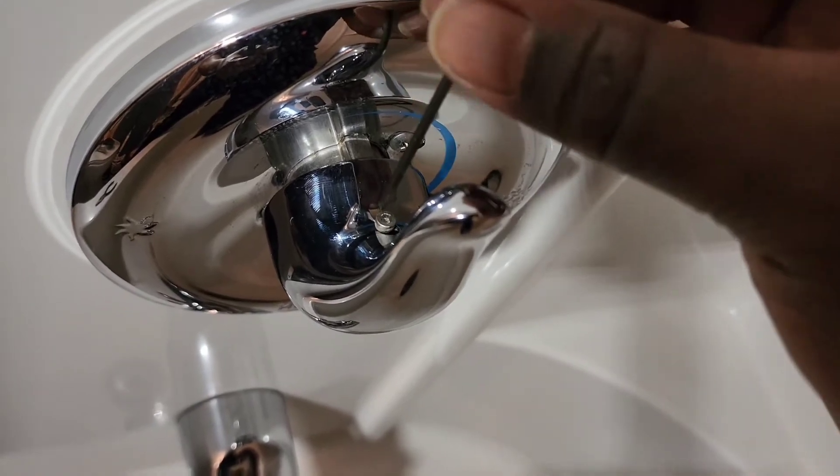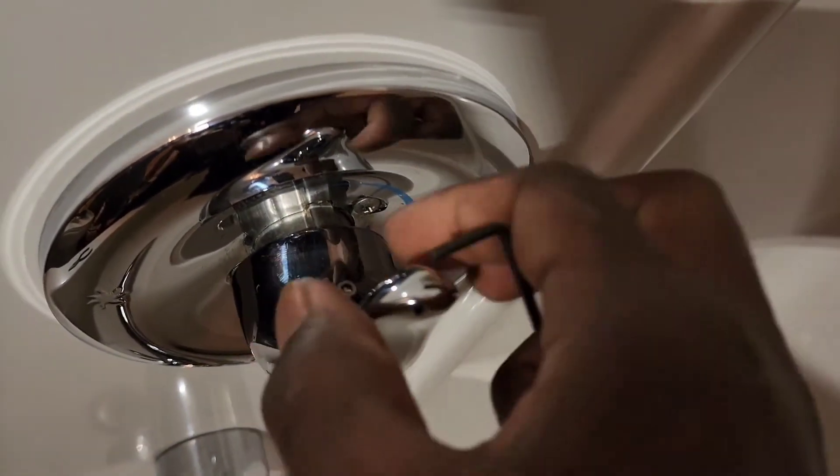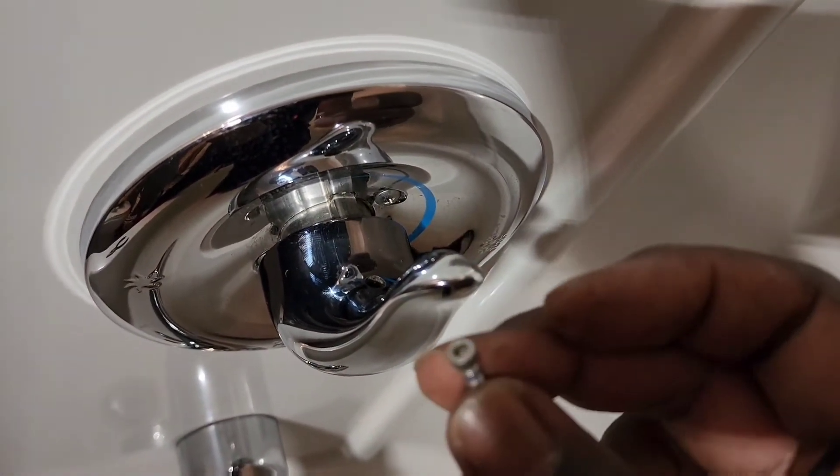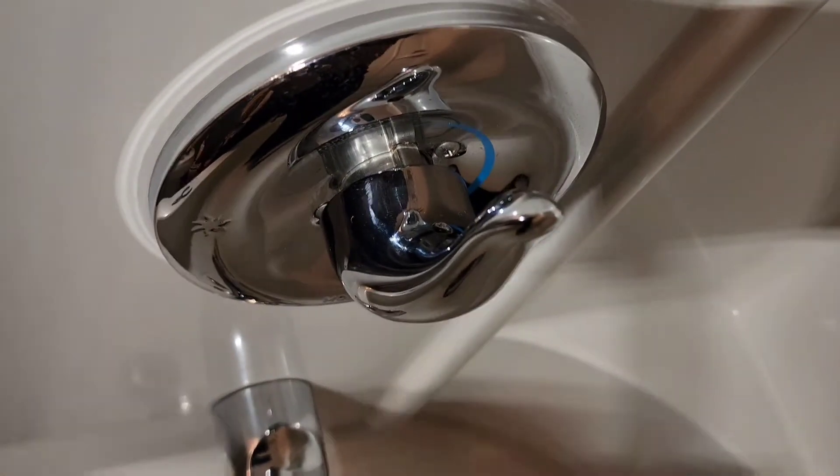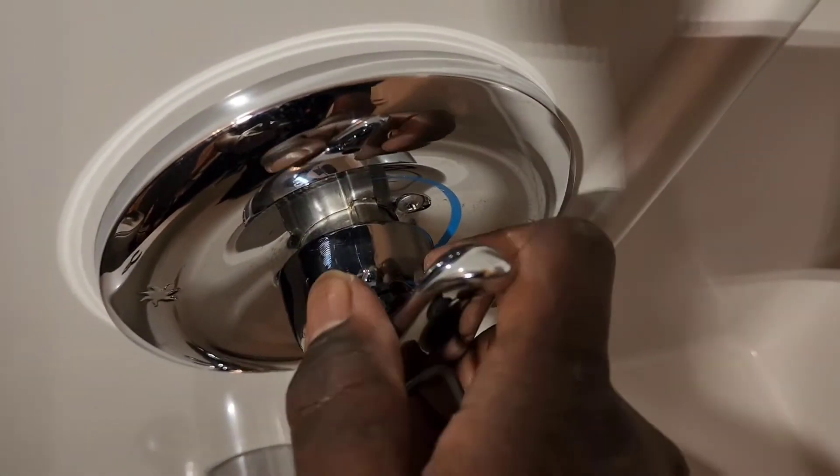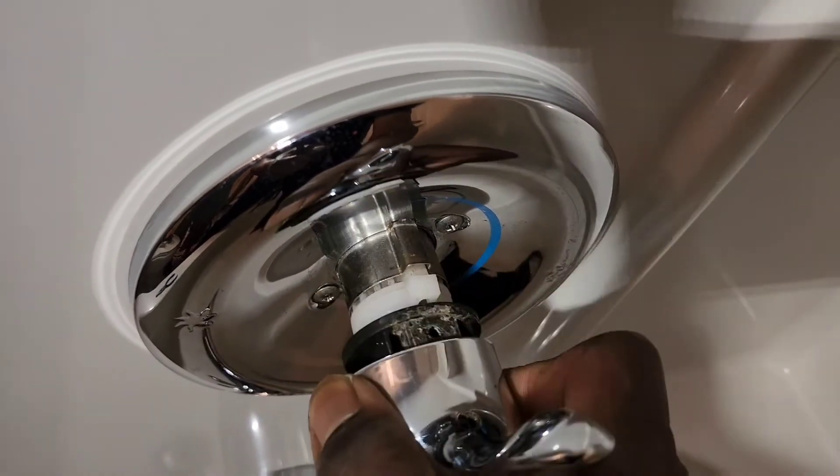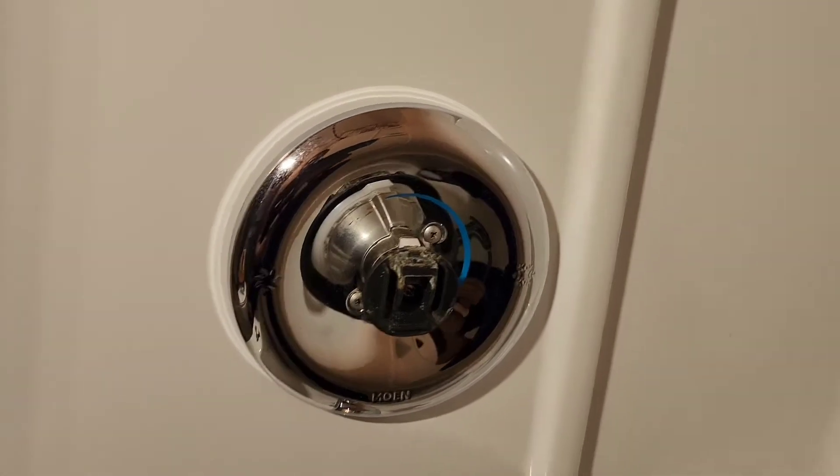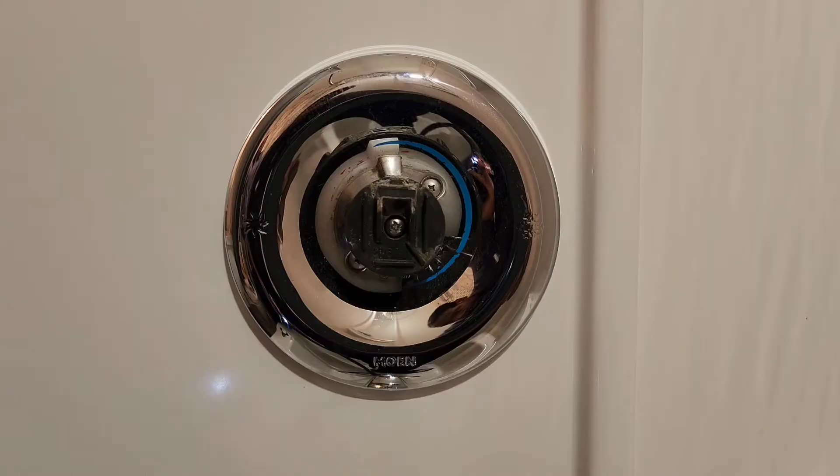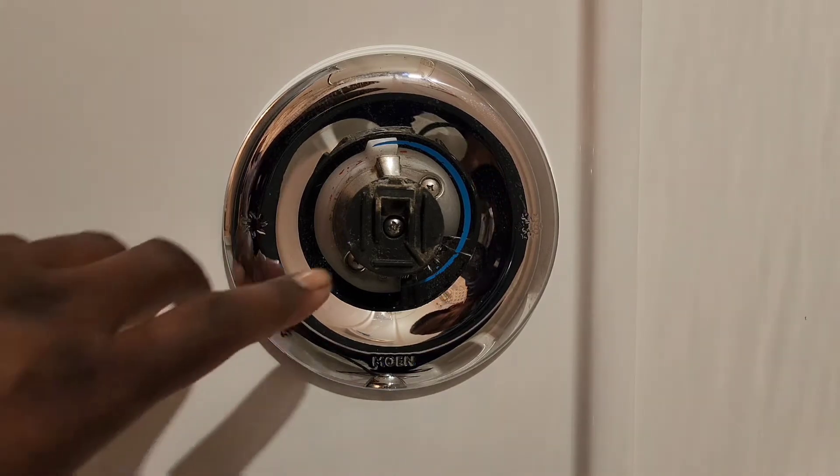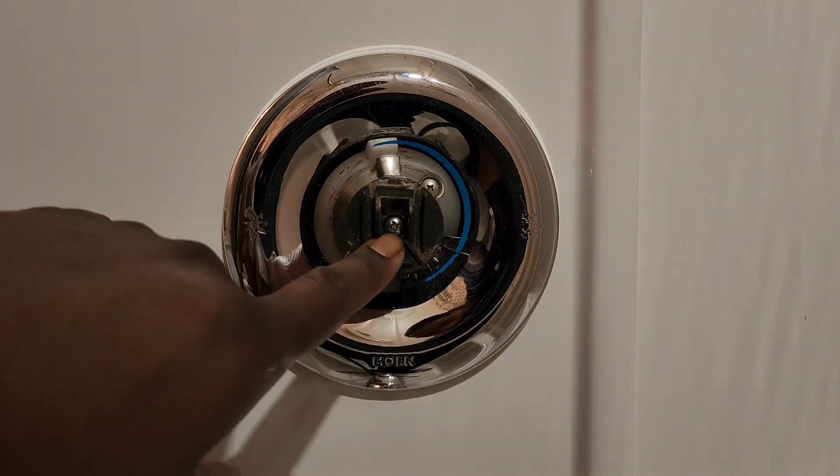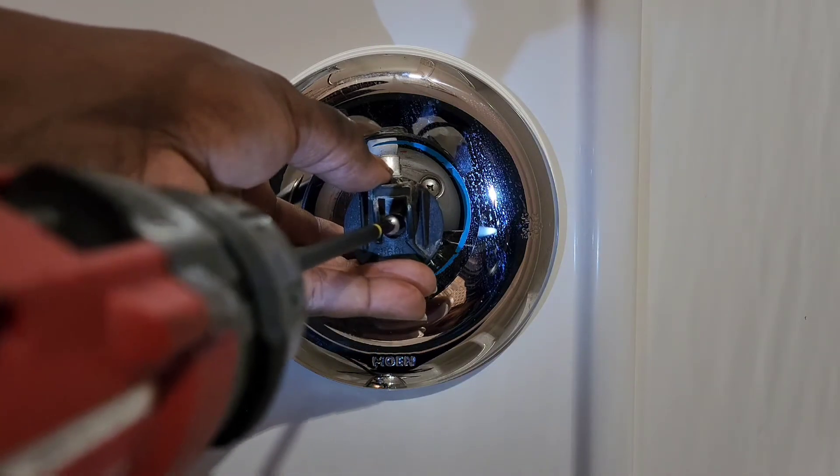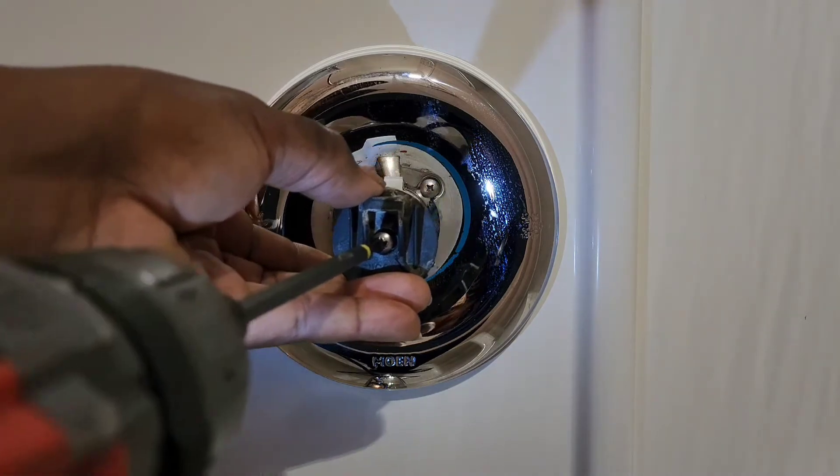You're going to take the screw out. This is the screw right here. This handle right here now should just pull directly off. There we go. Next thing you're going to do is take out this Phillips head screw that's right in the middle. Just grab it and put your drill in. There you go.